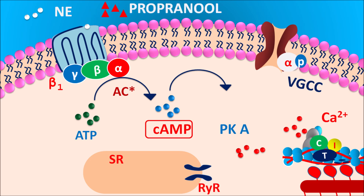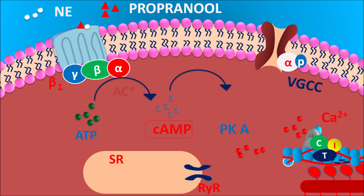Now propranolol is a beta blocker — it can bind to beta-1 receptors as an antagonist, thereby blocking the activity of beta-1 receptors. When these receptors are inactivated, cardiac contraction is inhibited, resulting in relaxation of cardiac muscle and a decrease in cardiac work. In this way propranolol can reduce sympathetic stimulation and thereby be used in the treatment of cardiovascular disorders.